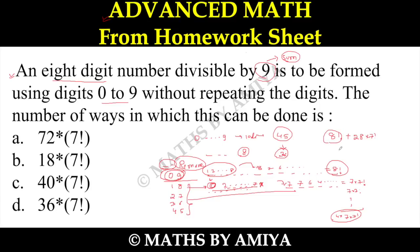8 factorial I can write as 8 times 7 factorial plus 28 times 7 factorial. So we have final number of formations as 36 times 7 factorial ways.